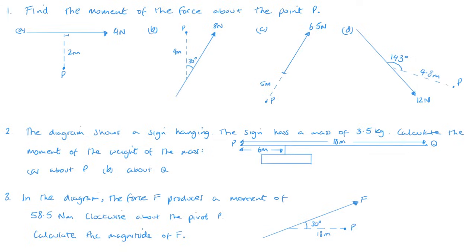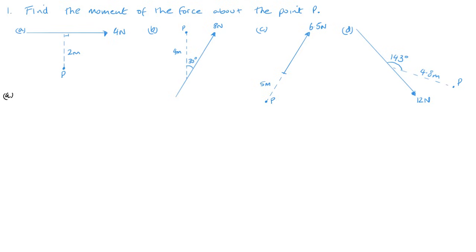Welcome back. Now let's look at the solutions. So for A we get the moment of the 4 Newton force, it's just going to be 4 times 2, which will be 8 Newton meters. Now for B we've got the moment, we want the perpendicular distance, this distance here in black, and that's going to be 8 times 4 sine 30, or 16 Newton meters.